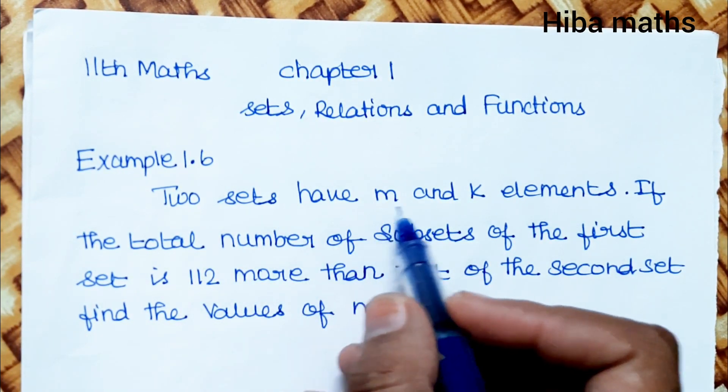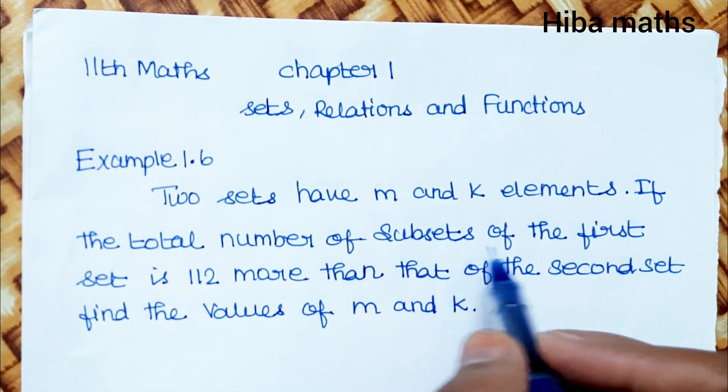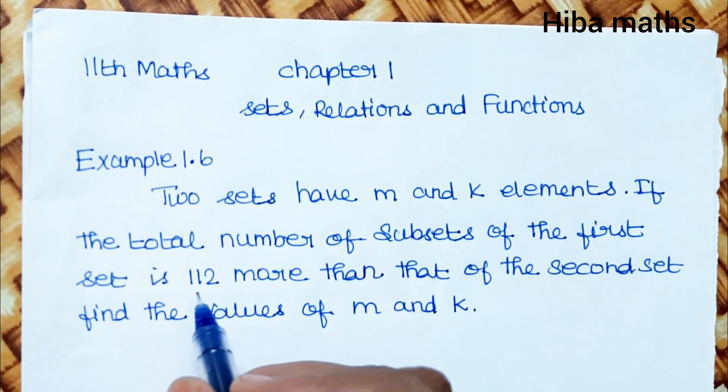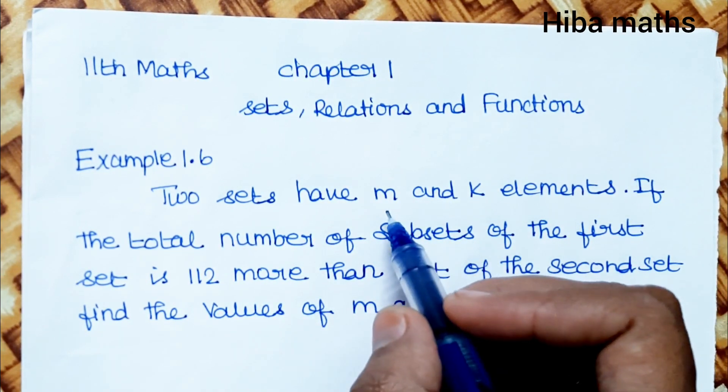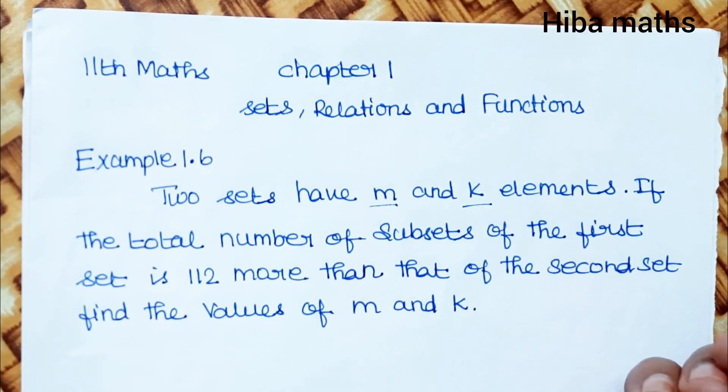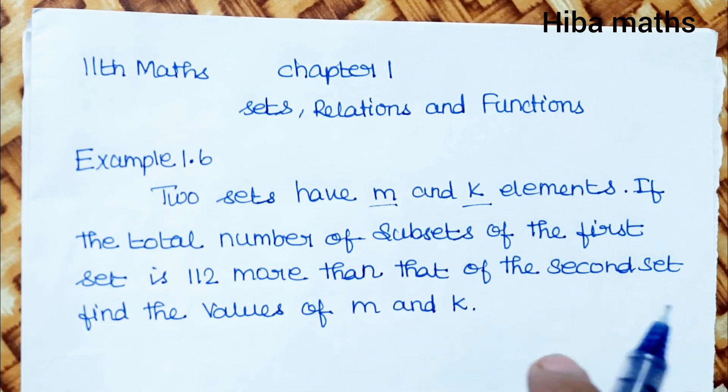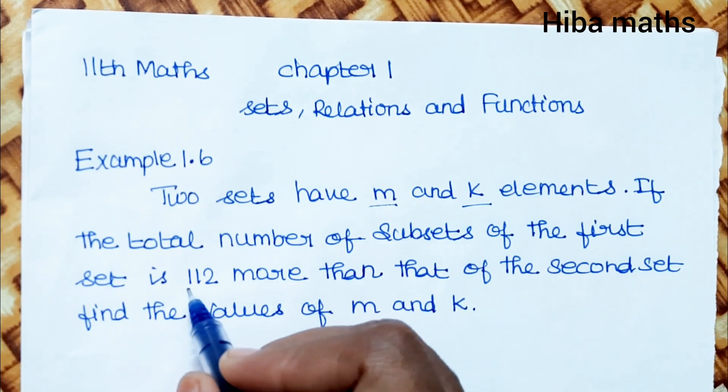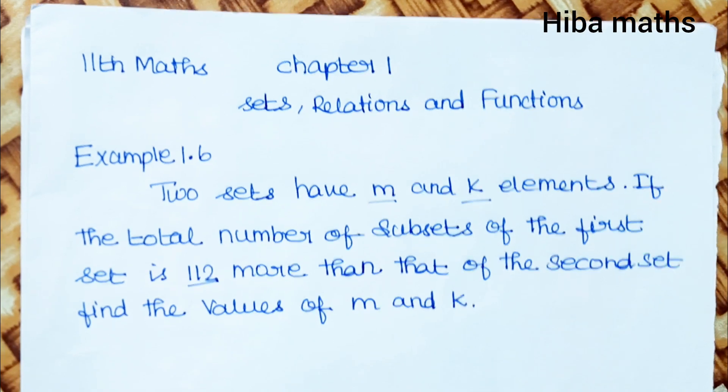Two sets have M and K elements. If the total number of subsets of the first set is 112 more than that of the second set, we will solve for the values of M and K.